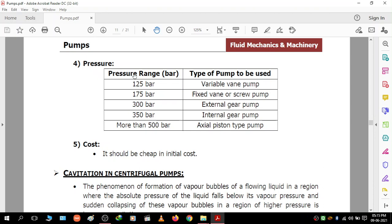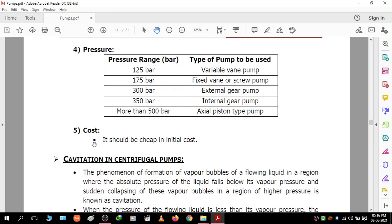Selection based on pressure range: variable vane pumps for 1-5 bar, fixed vane or screw pumps for 1.5-4 bar, external gear pumps for 3-5 bar, internal gear pumps for 3-5 bar, and axial piston pumps for 4-5 bar. Cost is also a consideration when selecting a pump. This is all about the selection of pump.